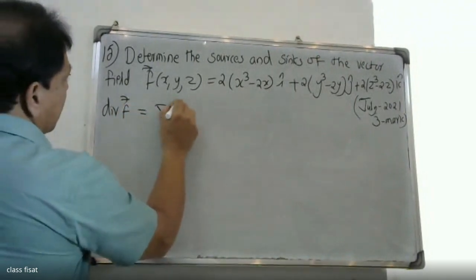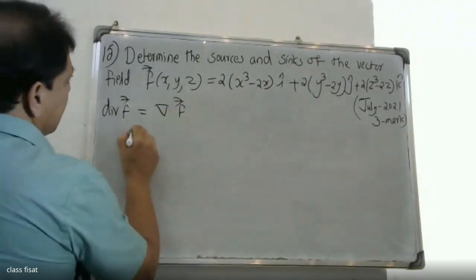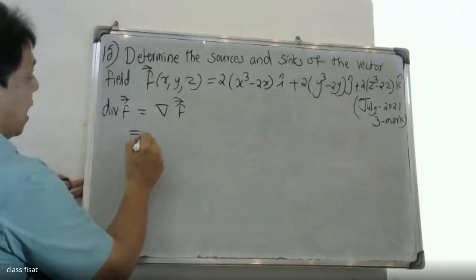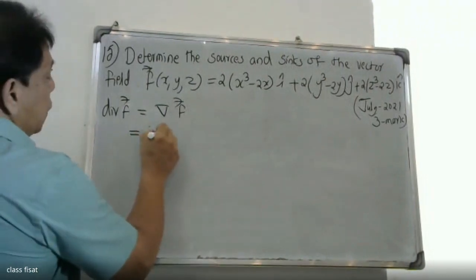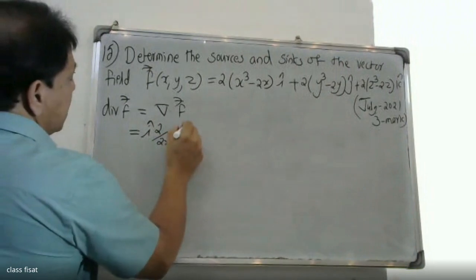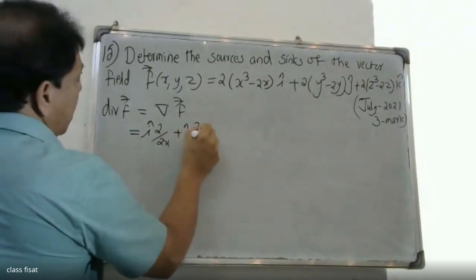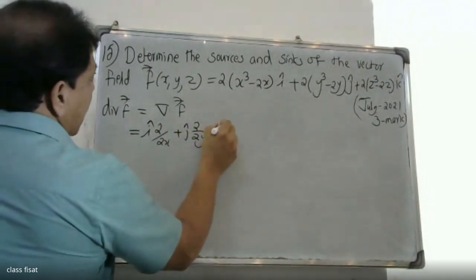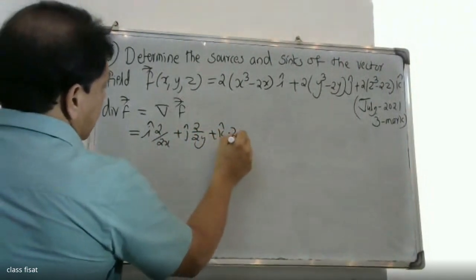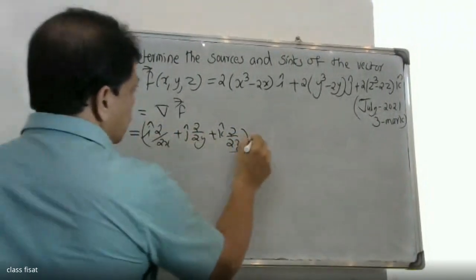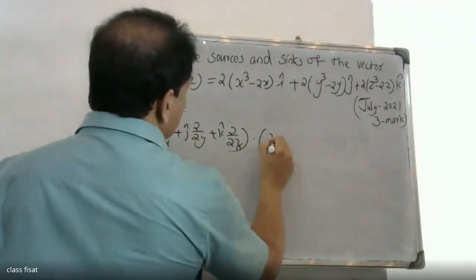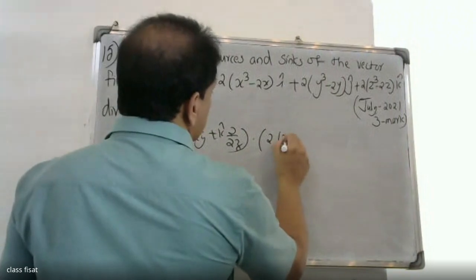Del dot F equals i ∂/∂x plus j ∂/∂y plus k ∂/∂z, dotted with F.